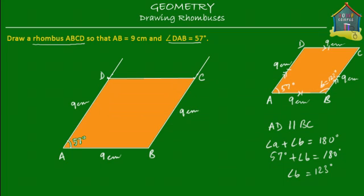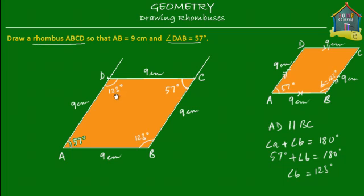That's the rhombus we were asked to draw. All sides are 9 centimeters. Now if you want to check that everything is correct, this angle at D should also be equal to 123 degrees, the same as angle B. You must also check angle C, because it must be equal to 57 degrees — opposite angles in a rhombus, or any parallelogram, are equal.